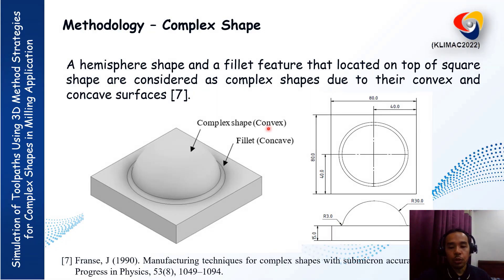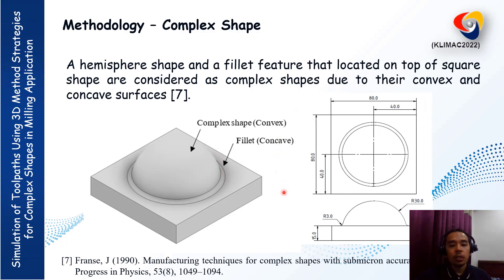One of the questions is: what is the complex shape? In this study, a hemisphere shape and a fillet feature located on top of a square shape are considered complex shapes due to their convex geometry. This is the convex shape, and this is the concave shape. The detailed dimensions of this shape are highlighted in this slide.